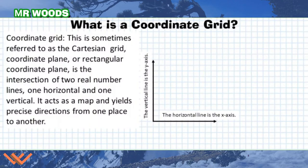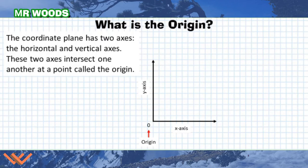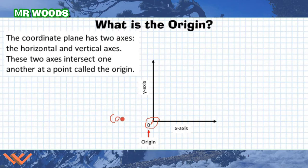First, you have to have an understanding of what a coordinate grid is. A coordinate grid is sometimes referred to as the Cartesian grid, a coordinate plane, the Cartesian plane — there are so many different names for it. You can distinguish it by its horizontal line, usually called the x-axis, and the vertical line, called the y-axis. They intersect at one point called the origin, and the coordinates for the origin are zero, zero.